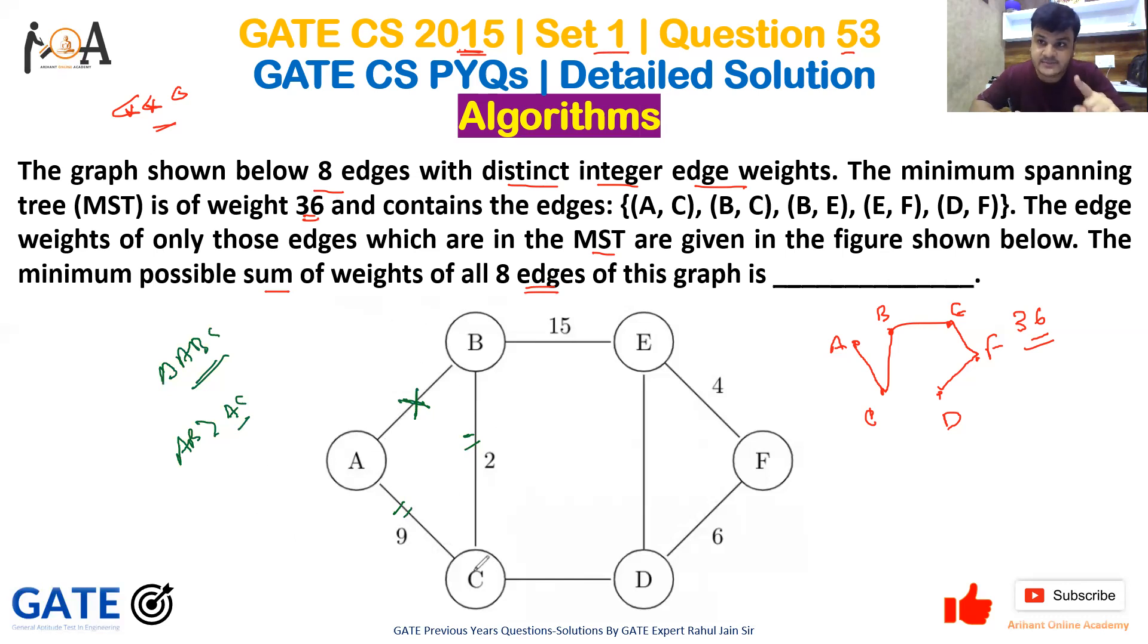Similarly, observe the cycle E-F-D. E-F is part of the MST, D-F is part of the MST, but E-D is not part of the MST. This clearly indicates that the weight of E-D is greater than the weight of D-F.